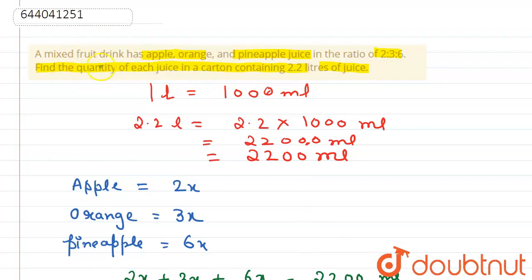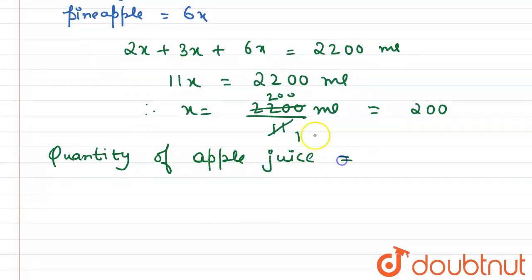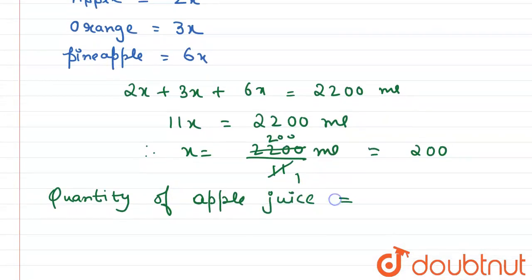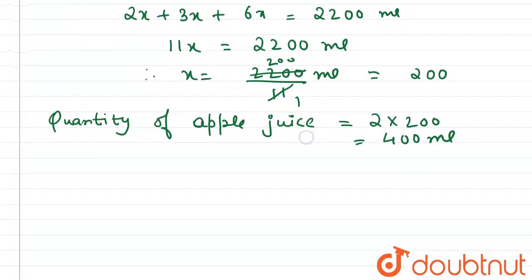Now by putting the value of x, the quantity of apple juice equals 2x, that is 2 into 200, which gives 400 mL.